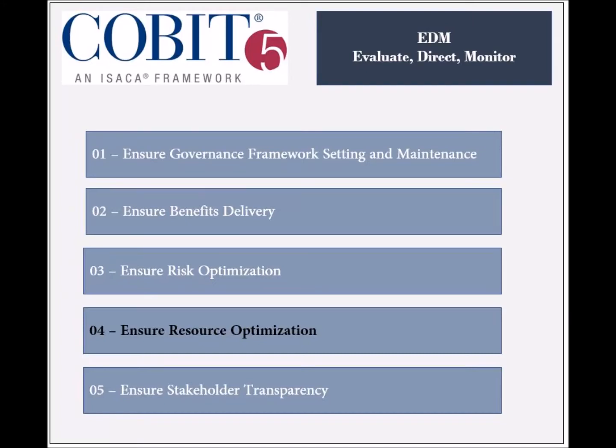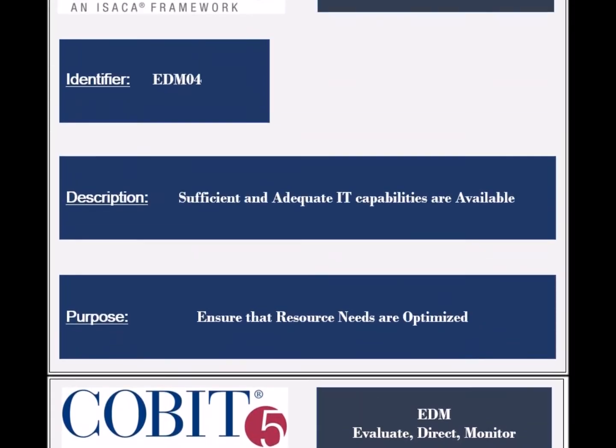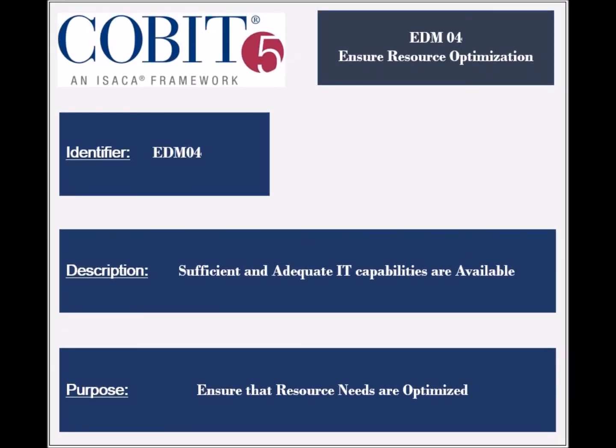The fourth process of the Evaluate Direct and Monitor domain is called Ensure Resource Optimization. The identifier of this process is EDM4. The process ensures that adequate and sufficient IT resources are made available, which would support the achievement of the enterprise objectives.